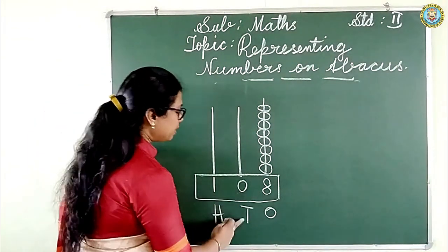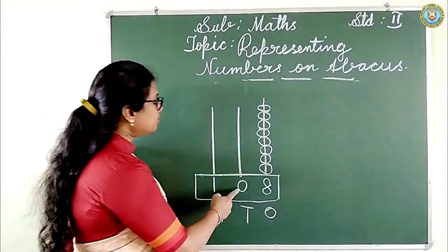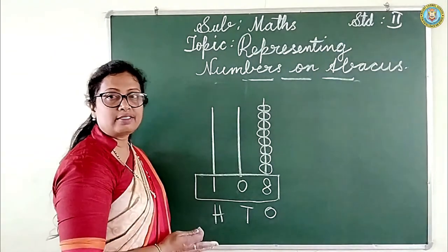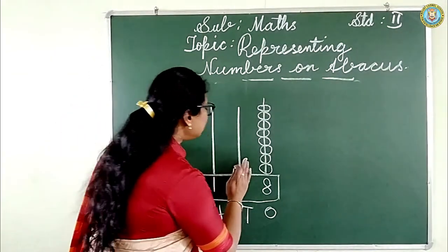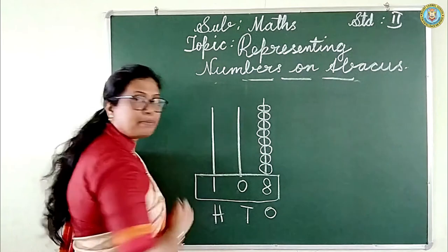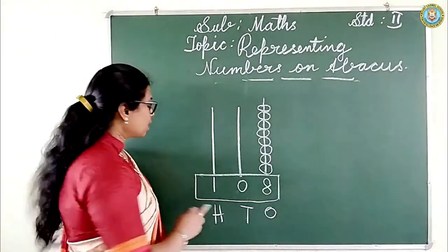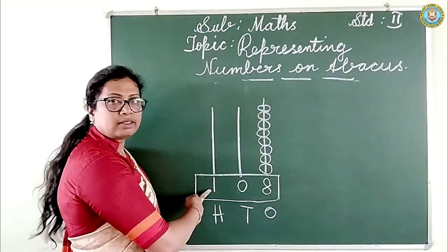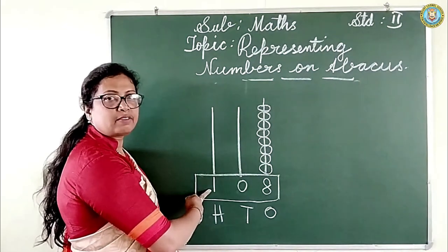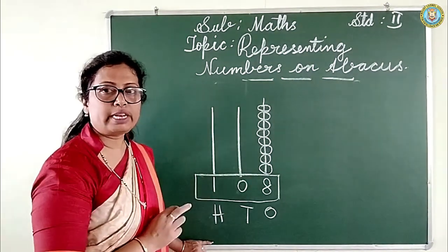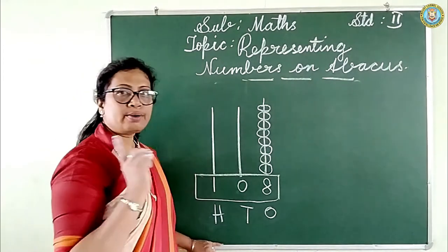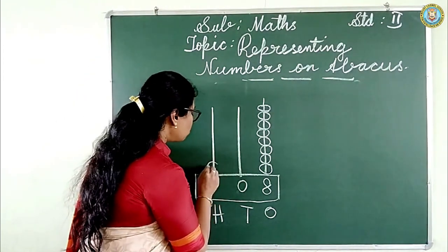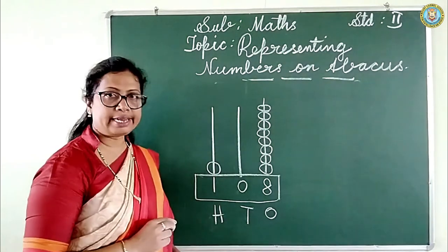Move to the next place — tens. Is there any number in tens? No, zero is there, so no need to put a bead here. Look at hundreds: the digit is one, so put only one bead in the hundreds spike.